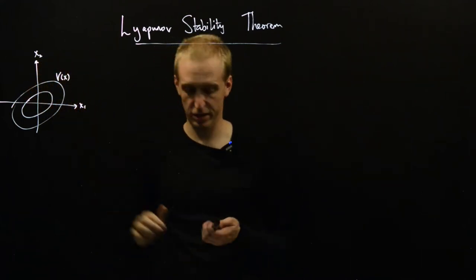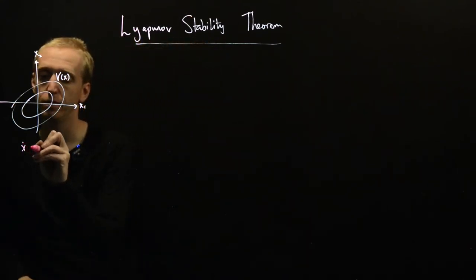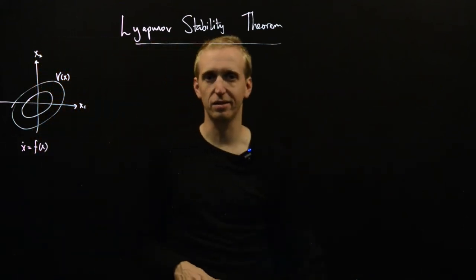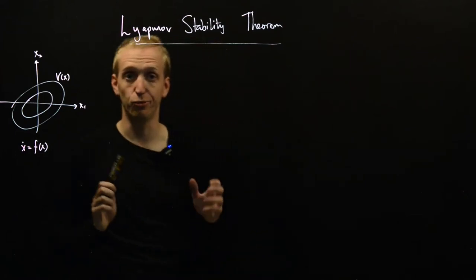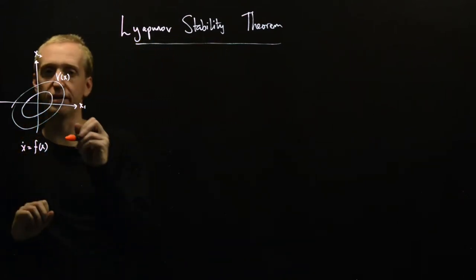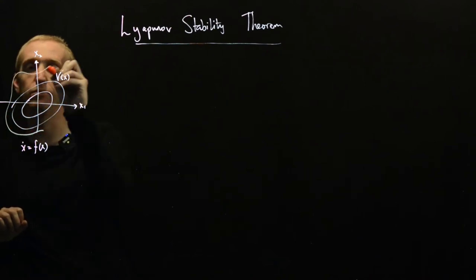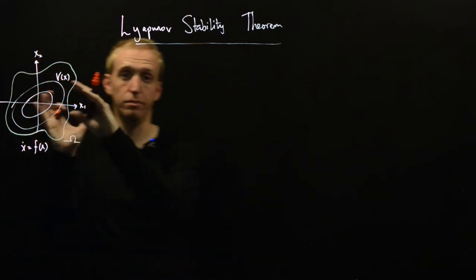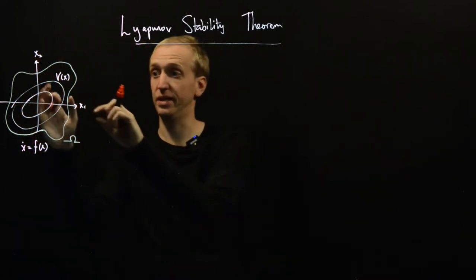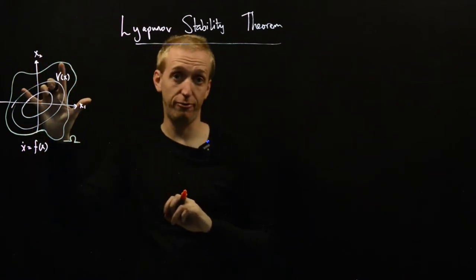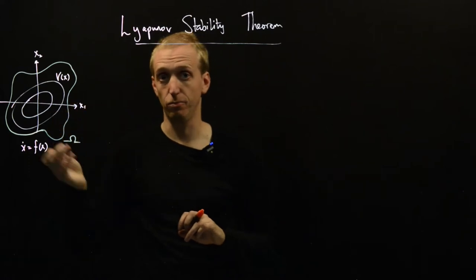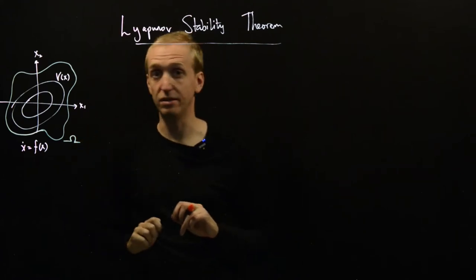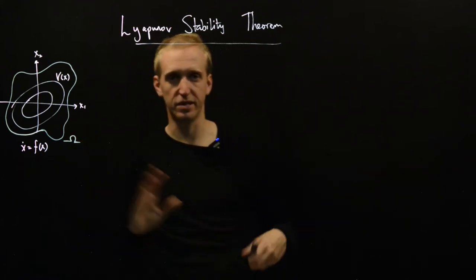So let's suppose that again we have some state space model, x dot is equal to f of x, and we have a Lyapunov function, and now we're going to say that the Lyapunov function is defined on some region of the state space omega. So let's say we have some region here, and this is just some bounded subset of our state space where our Lyapunov function is defined.